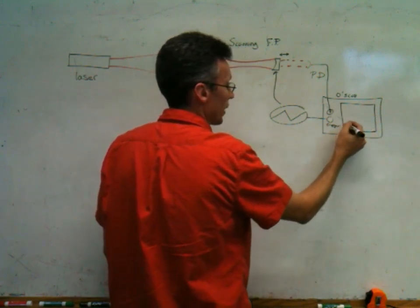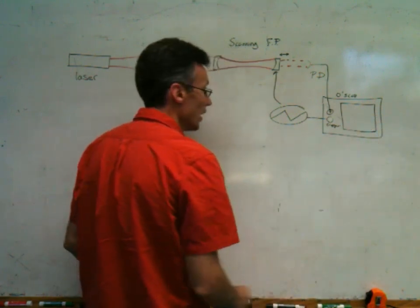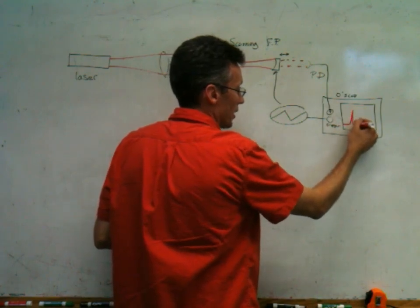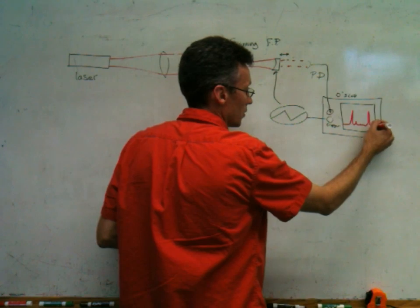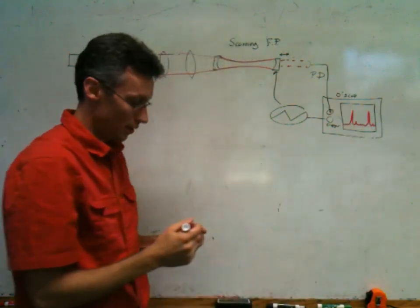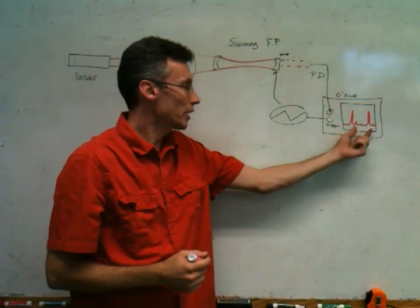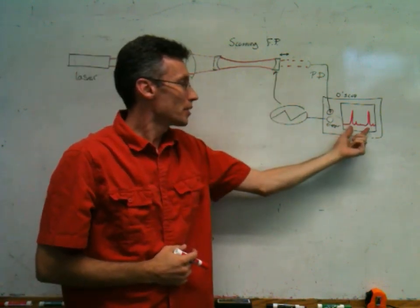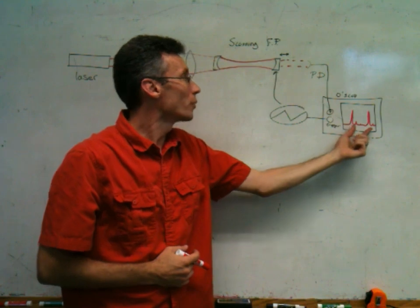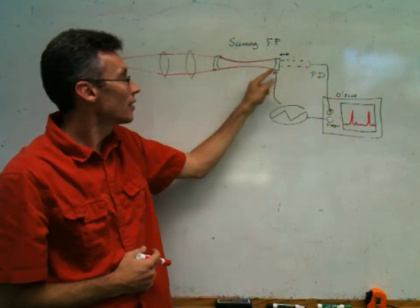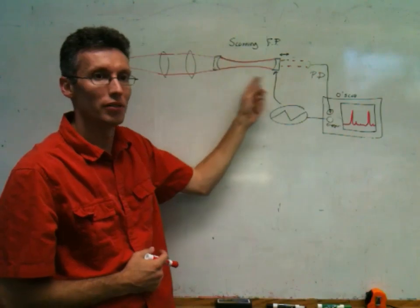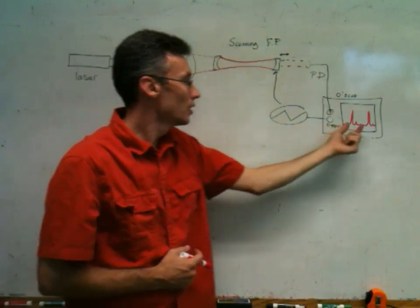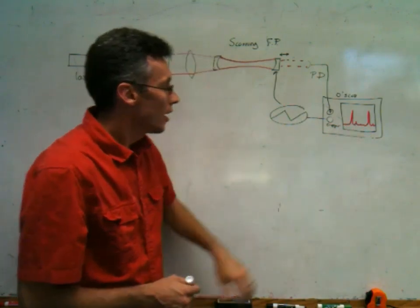And if we do that, what we'd expect to see is peaks in a repetitive pattern. Where the spacing of those peaks corresponds to the free-spectral range of my cavity, if we're scanning the mirror, this represents the time over which the mirror has moved by a half a wavelength. So, we've increased the number of wavelengths in this resonant cavity by one between successive peaks.